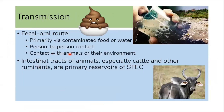Transmission usually occurs through the fecal-oral route, primarily via contaminated food or water. It can also be transmitted through person-to-person contact or through contact with animals and their environment. The reservoir is the intestinal tract of animals, usually cattle and other ruminants.